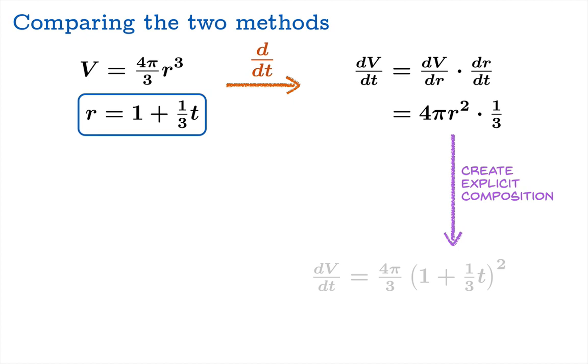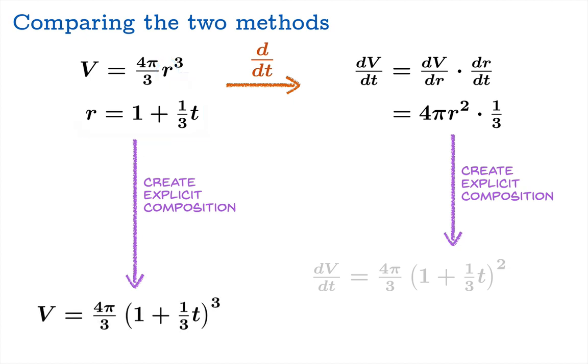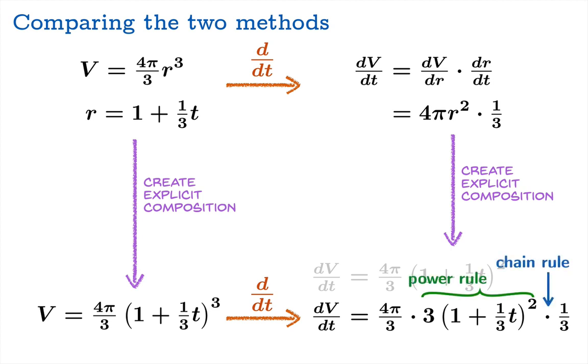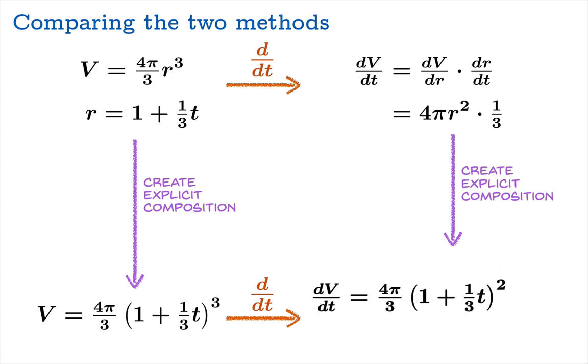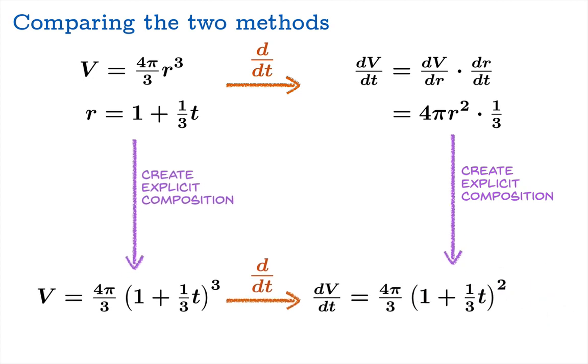Now, in the second method, we substituted this into the formula for v first to create an explicit composition, and then we took the derivative. Don't forget the chain rule. These factors of 3 cancel, and we get this expression. These two expressions for dv dt match, and so we conclude that these two different routes lead to the same destination.